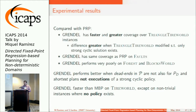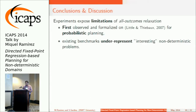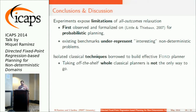Compared to MVP on tireworld, except on non-trivial instances, MVP performed much better than us when the problem had no solution. The experiments exposed the limitations of the all-outcomes relaxation — it's really useful, but it's not the only thing we need. We also need more benchmarks that represent interesting and meaningful non-deterministic problems.